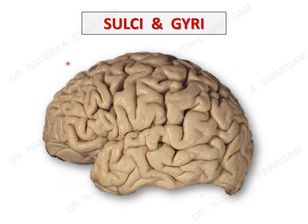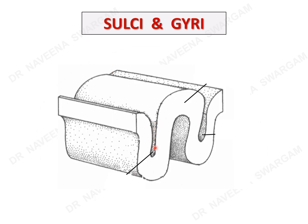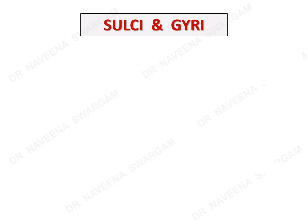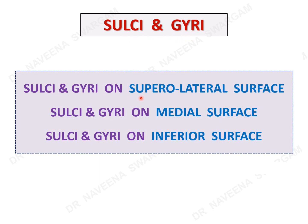Now it's time to learn about sulci and gyri of the cerebrum. The surface of the cerebrum is thrown into foldings, because of which it shows depressions and elevations. A depression is known as a sulcus, whereas an elevation is known as a gyrus. We will learn the sulci and gyri according to the surfaces of the cerebral hemispheres: the superolateral surface, medial surface, and inferior surface.